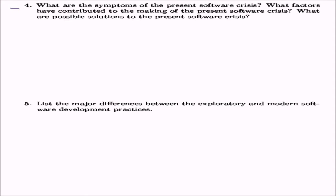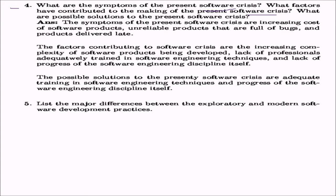The fourth question asks about the software crisis: what are its symptoms, what factors contributed to it, and what are the possible solutions? The symptoms of the present software crisis are increasing cost of software products, products being unreliable containing bugs, and products often being delivered late and running out of schedule.